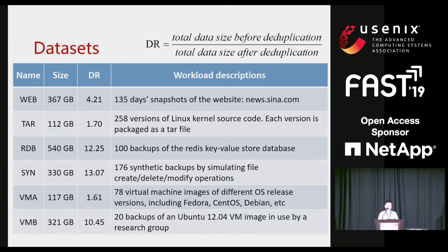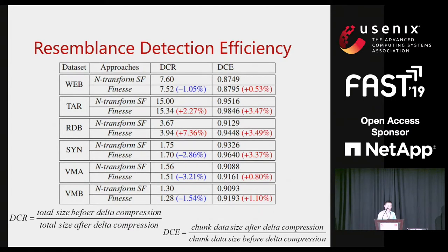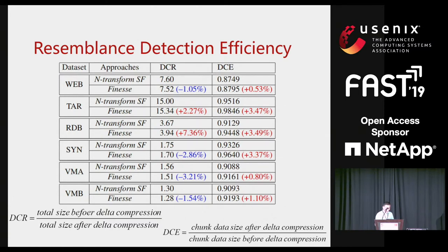Six datasets with various deduplication ratios are used for evaluation, including website snapshots, TAR source code files, database snapshots, and virtual machine images. Two important metrics are used to evaluate the two approaches. DCR measures how much space is saved — the redundancy detected and eliminated — and higher is better. We can also observe that data compression can really achieve additional compression ratios from 1.3 to even as high as 50 times after data deduplication.